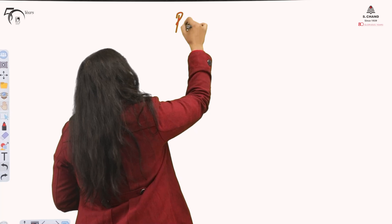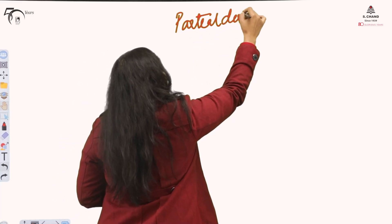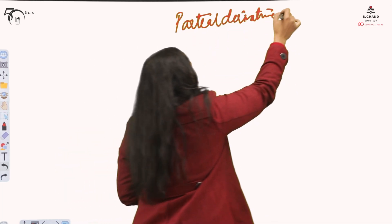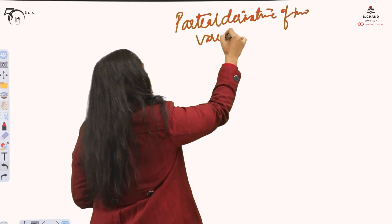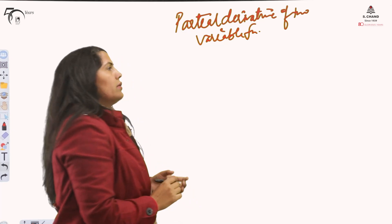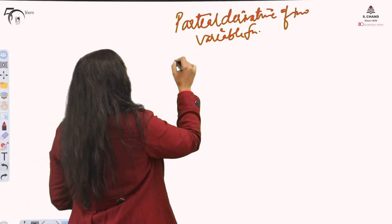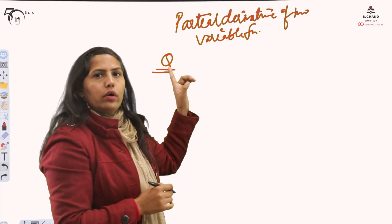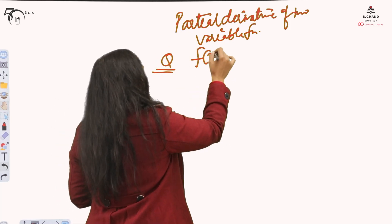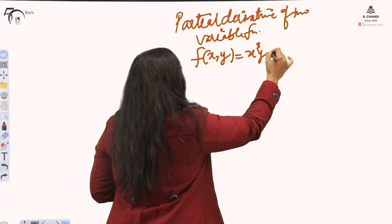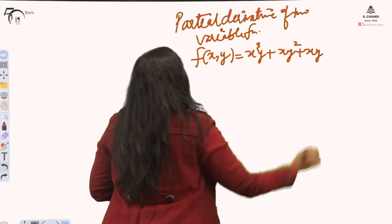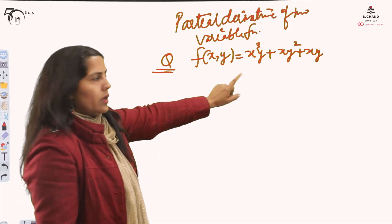For a one-variable function we have the total derivative concept, but partial derivatives also involve a total derivative concept. Let's start with the partial derivative of a two-variable function. When the term 'partial derivative' is used, it means the function has two or more variables. As per the syllabus, we stick to two variables only. I will start with an example: let my function f(x, y) = x³y + xy² + xy. You can see it is completely in x and y — it is a two-variable function.